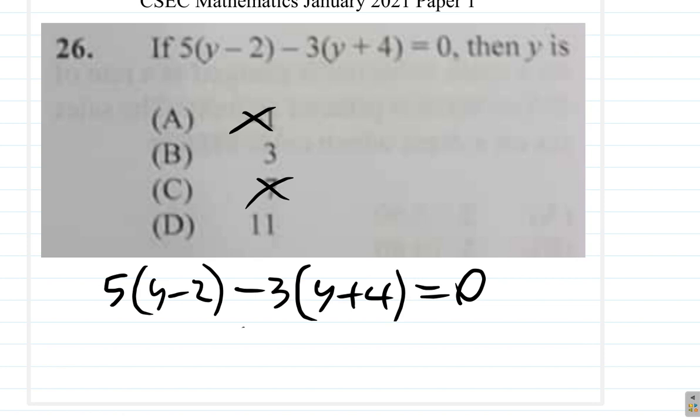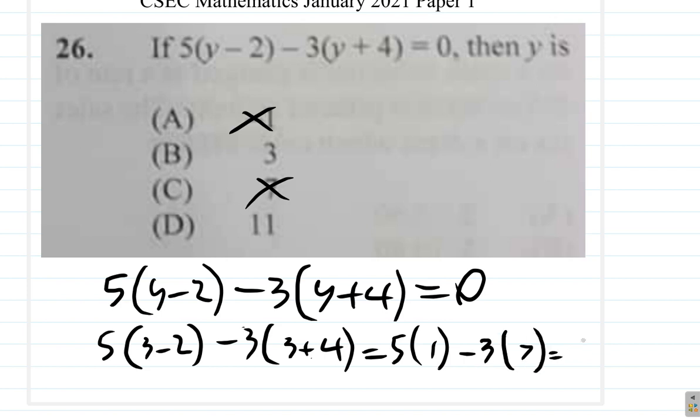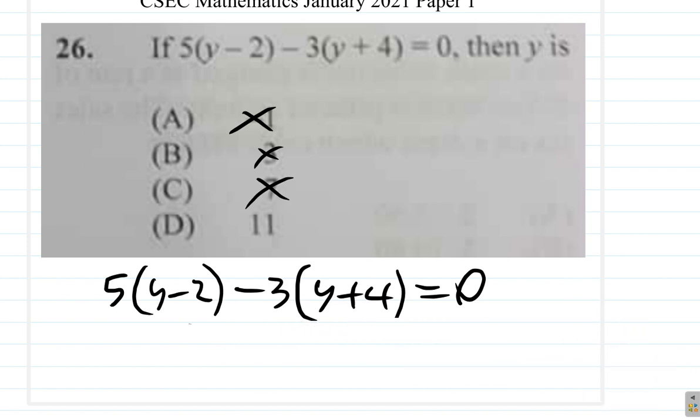Good thing is we have only 2 more to test. Let's try 3. Is it 3? 5, 3 minus 2, minus 3 times 3 plus 4 equals 5 by 3 minus 2 is 1, minus 3 times 3 plus 4 is 7, equals 5 minus 3, 7, 21. 5 minus 21 did not work out either. Let me try 3. Well, nothing very good luck today at all because all 3 that we tried didn't work.